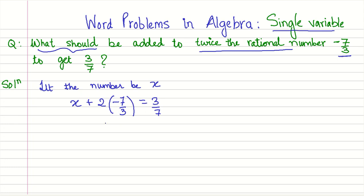However, before we proceed to solve it, we should try to simplify this. So we say x. Now if you look at this, there is a negative sign here. So when 2 multiplied by minus 7, it becomes minus 14 by 3 and this plus and minus combination gives you minus. So x minus 14 by 3 equals 3 by 7. Now this is our algebraic equation.